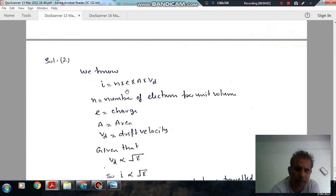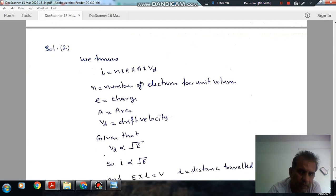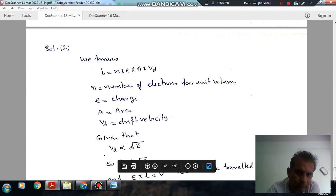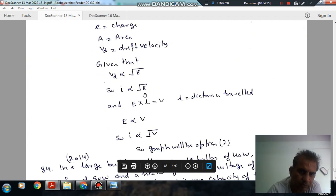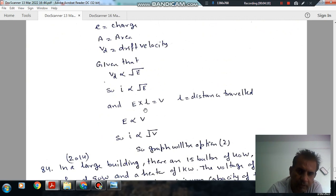So, N is number of electrons per unit volume and E is charge, A is area, VD is drift velocity. And VD is given as proportional to root E. Keeping all other things constant, I is proportional to root E. And VD is drift velocity and potential is given by V, potential is given by E into L.